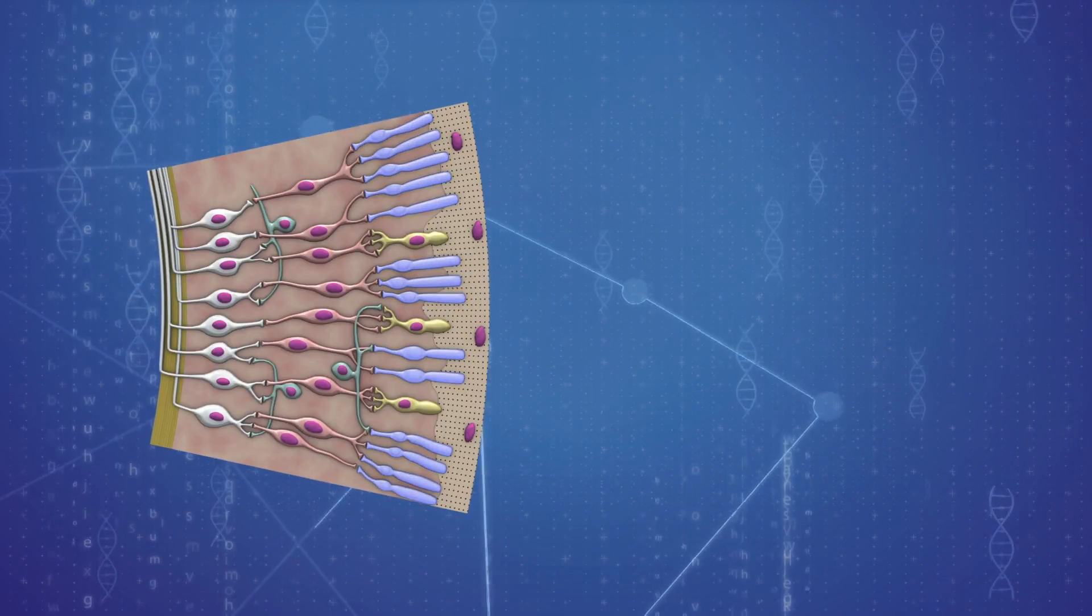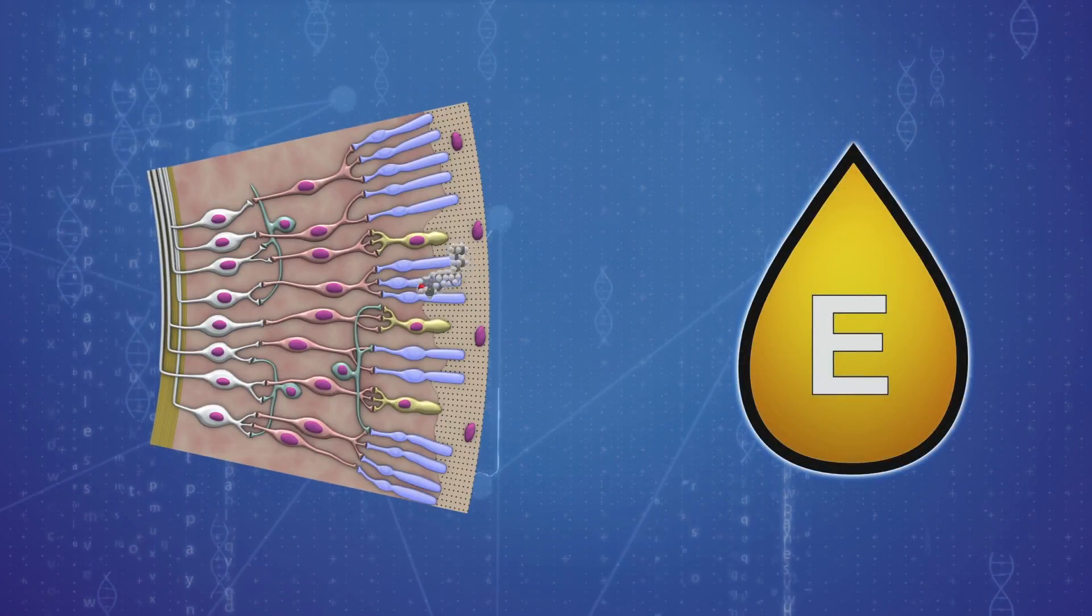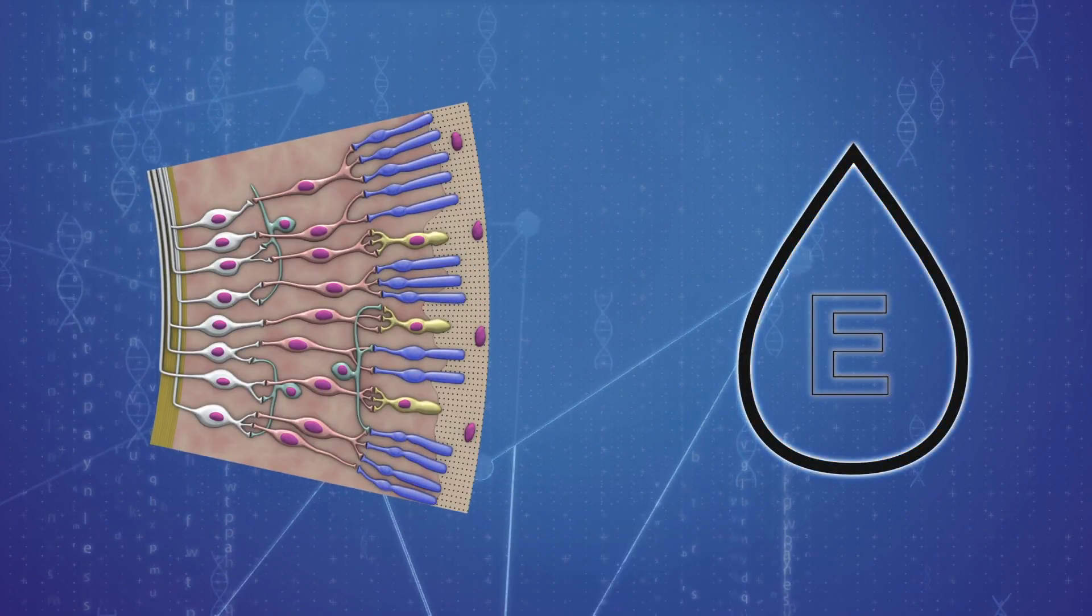These cells are incapable of regenerating. Alpha tocopherol, a form of vitamin E, was found to reduce cell damage. But as vitamin levels decrease with age, prolonged blue light exposure may lead to macular degeneration, a leading cause of blindness.